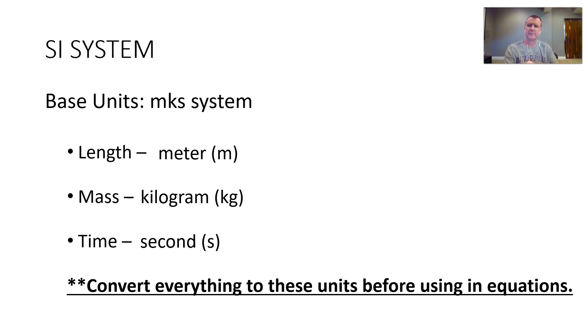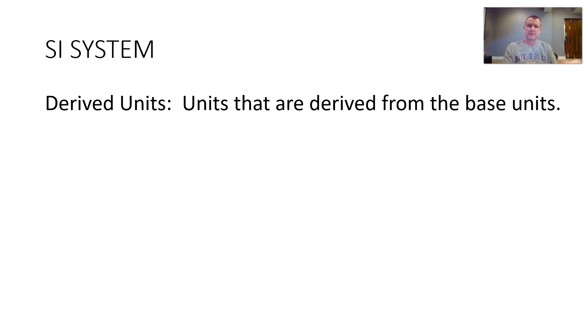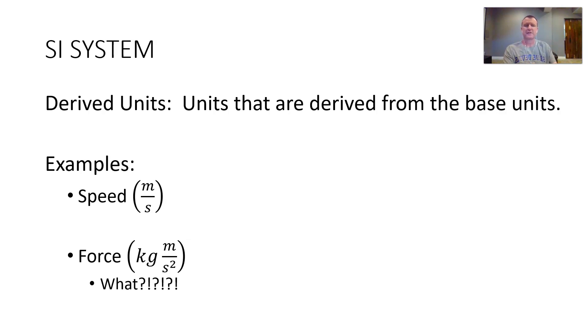Now, side note, a smaller system in the SI system is called the CGS system. So instead of meters, kilograms, seconds, they would use centimeters, grams, seconds. But you don't need to worry about that. We're using the MKS system. Derived units are units that are just simply derived from these base units, the meter, kilogram, second. One example is speed. Speed is in meters per second. It's a length over time. And our base unit for length is meters. Our base unit for time is seconds. Force, that's a weird one. A lot of these derived units are going to get kind of weird looking, sometimes not very conceptual. So don't worry about force right now. I just put that in there as an example of a derived unit that's got kilograms, meters, and seconds in it. But we don't need to worry about that now. We'll get there when the time comes.